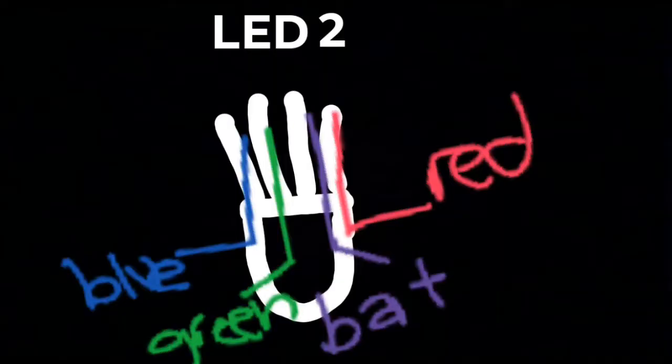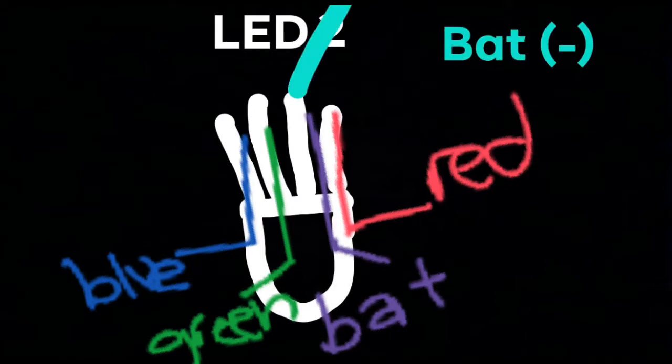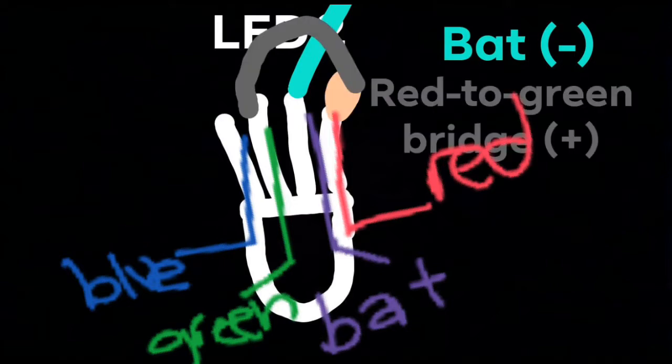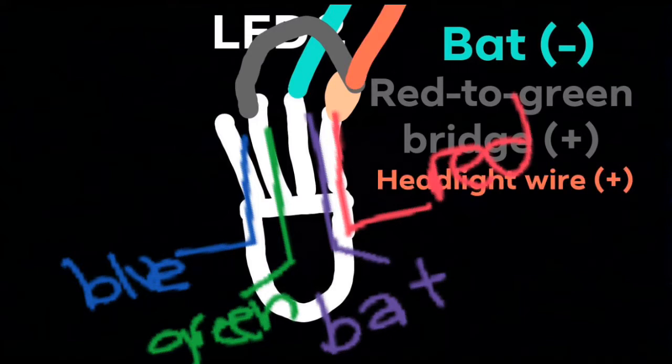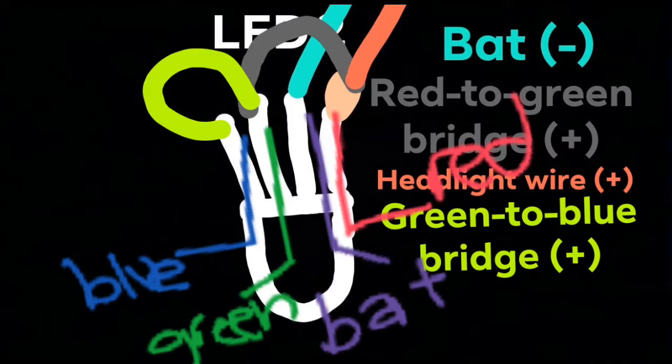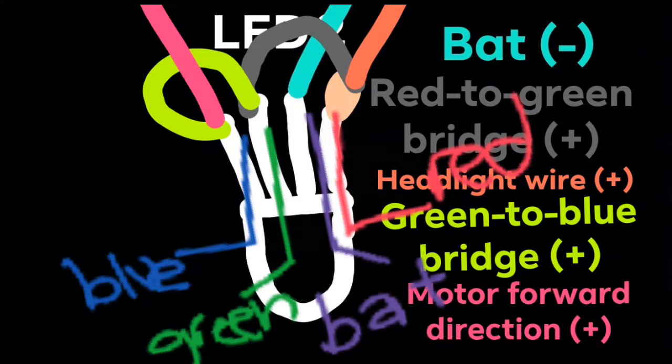Now, the process for the second LED is very similar, but there's a couple of differences with the wiring. Connect another battery wire to the common side of the second LED. Put a resistor on the red side, then bridge the red side to the green side. Then, put the positive headlight wire on it. Then, connect the blue and green sides together. Then, attach the blue side to the motor, positive direction.